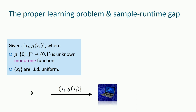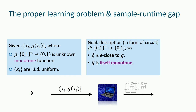What do we mean by learning? You're given samples x_i and f(x_i), guaranteed to come from some monotone function g, with the x's iid uniform. You output some g-hat that's close to g. Properly learning additionally asks that g-hat is itself monotone — the hypothesis must be a member of the hypothesis class.